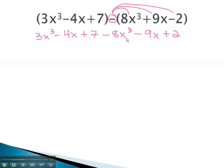Notice as we multiply the negative through, it changes the sign. The 8x became negative, the positive 9x became negative 9x, because a negative times a positive is a negative, and a negative times a negative is a positive.